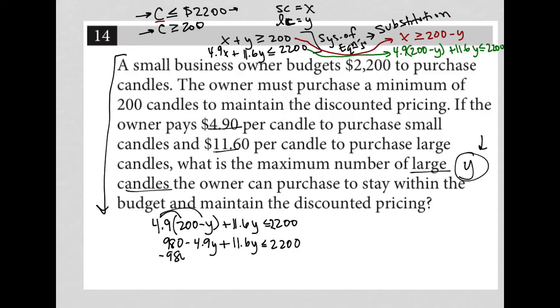I'm going to subtract 980 from both sides. Okay. So I get 1220 on this side. I have like terms here, negative 4.9 plus 11.6. So do that in my calculator as well. So I get 6.7. So I have 6.7Y is less than or equal to that. So just write this up here for more space. 6.7Y less than or equal to 1220.